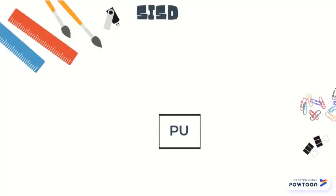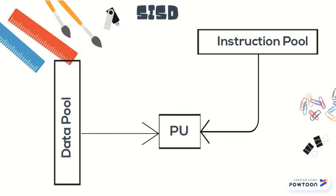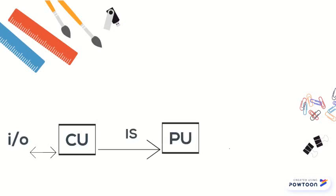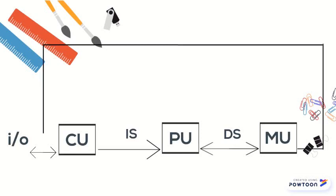Processing unit PU will receive an instruction pool and data pool. The structure of an SISD consists of a control unit CU that provides an instruction stream. The processing unit operates on a single data stream, and there is also the memory unit MU.